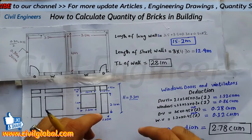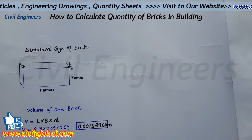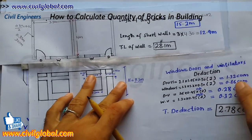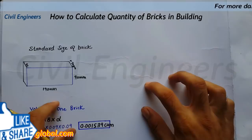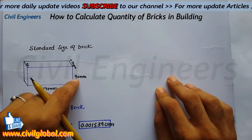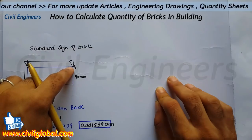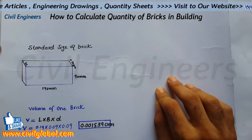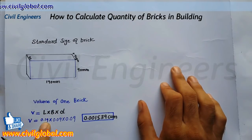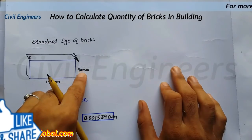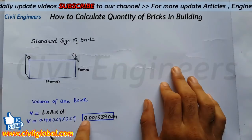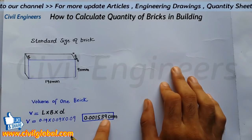First of all I will find out the volume of the wall. I will use the standard size of brick to find out the quantity for the bricks in these two rooms. The standard brick size: length = 190 mm, breadth = 90 mm, and thickness (depth) = 90 mm. So volume of one brick V = L × B × D = 0.19 m × 0.09 m × 0.09 m = 0.001539 cubic meters.